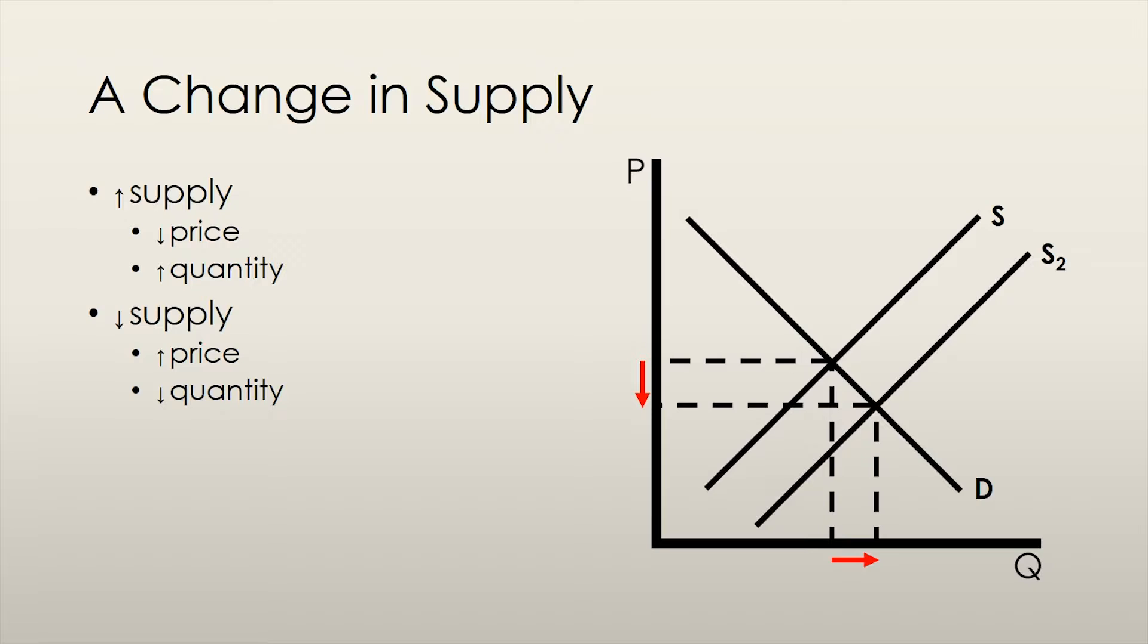The effects of a change in supply can also be deduced quite intuitively. If producers begin producing more at every price, let's say because more producers have entered the market, then we can say that the supply of the good in question has increased. More and more of the good is being offered for sale and sellers can't sell all their inventory at the original equilibrium price.